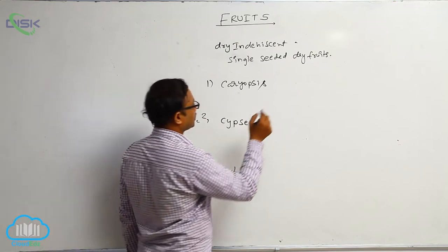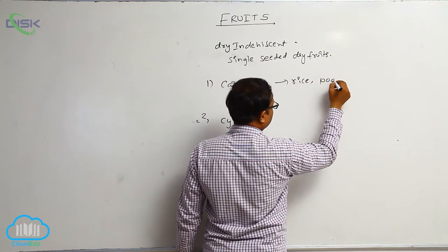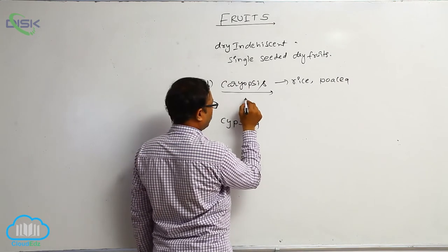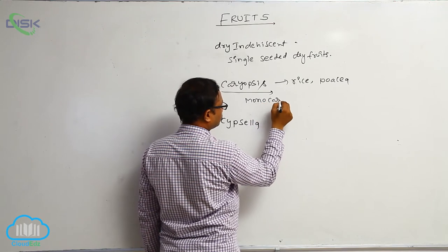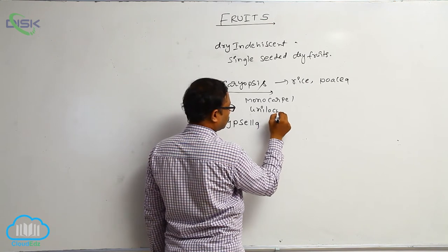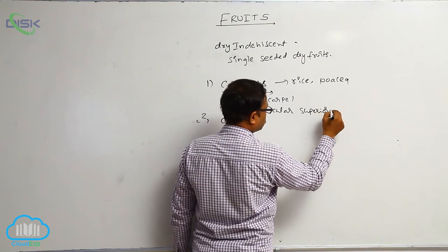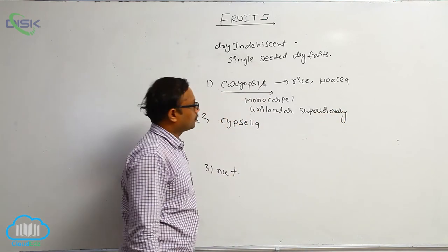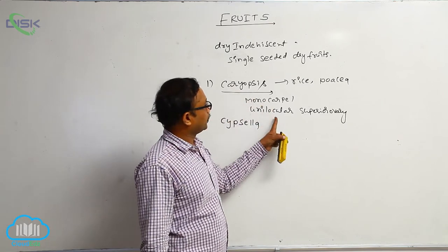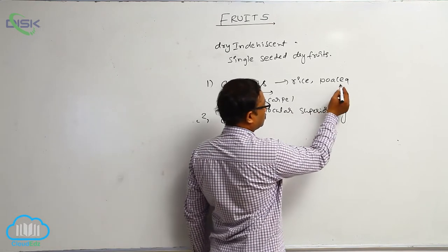Caryopsis — example: rice, from the Poaceae family. The caryopsis dry fruit is formed from a monocarpel, unilocular, superior ovary. The fruit is formed from a monocarpel unilocular superior ovary, and that is known as caryopsis. Example: rice, Poaceae family.